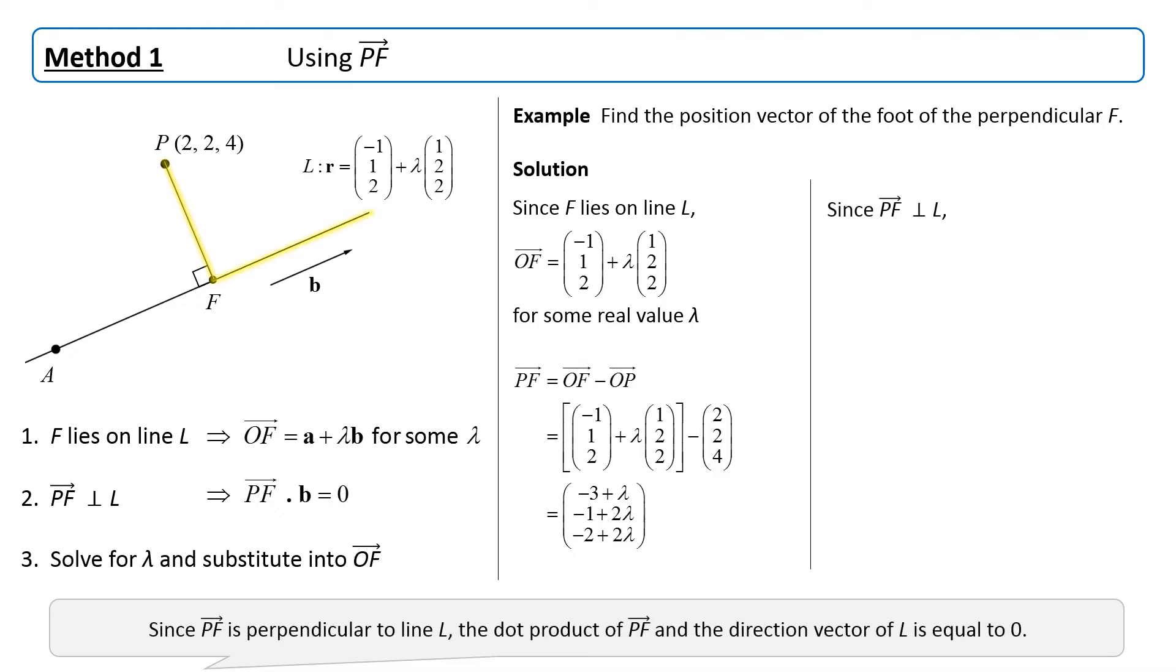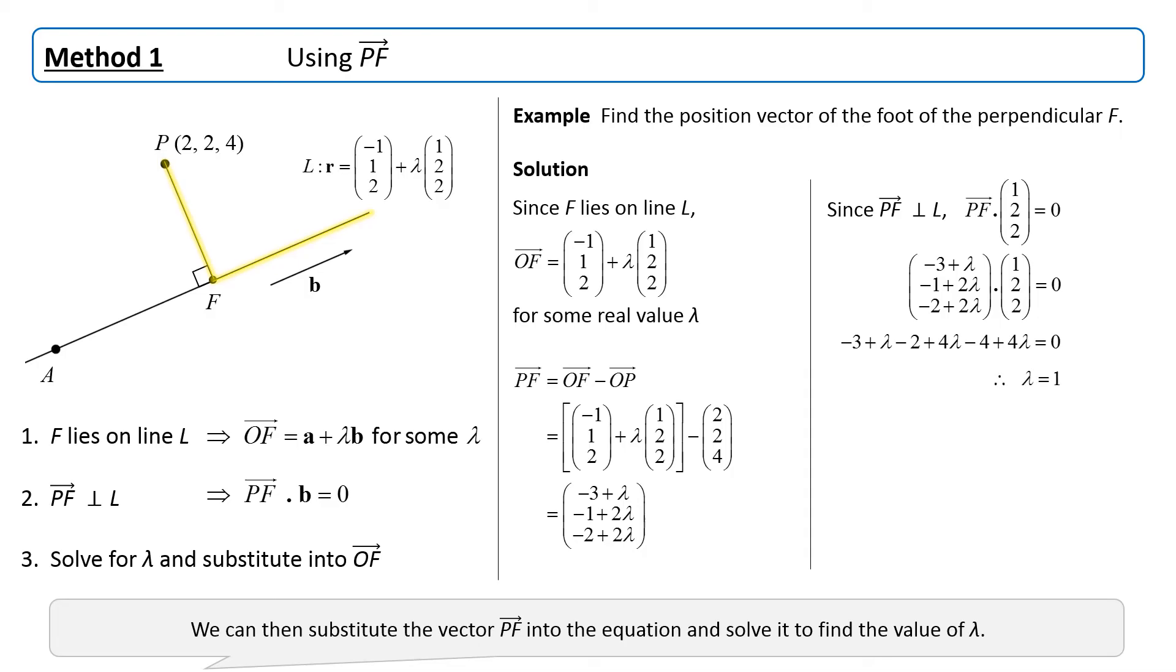Since PF is perpendicular to line L, the dot product of PF and the direction vector of L is equal to 0. We can then substitute the vector PF into the equation and solve it to find the value of lambda. Finally, substitute the value of lambda into the expression for OF to arrive at the answer.